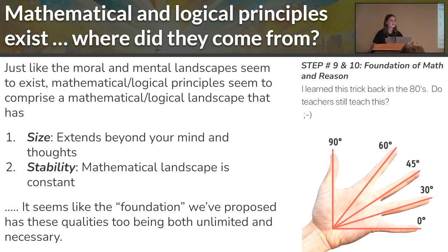And then the final thing we're going to look at for our examination today is mathematical and logical principles. They exist. Where do they come from? Well, when we think about mathematics and logic, we notice that they have two qualities. The first is size. It extends beyond your mind or your thoughts. So just because you can't understand mathematical chain of reasoning or what some mathematical entities are doesn't mean that they don't exist. They extend beyond your mind or your capacity to think them.